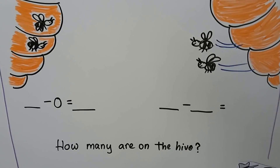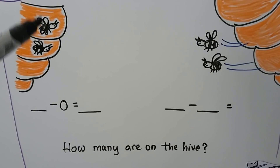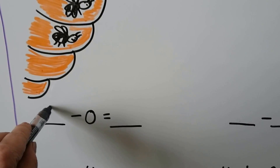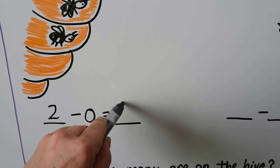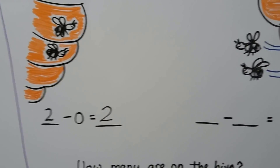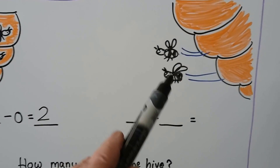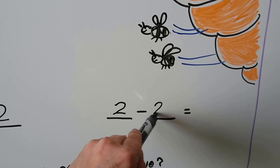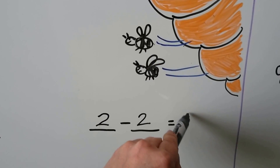How many bees are on the hive? There are two bees on the hive. Zero are flying away, so there are still two. Two minus zero is two — the number stayed the same. In the next picture, there were two bees and two flew away. How many bees are on the hive? Zero.